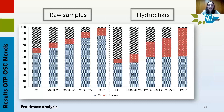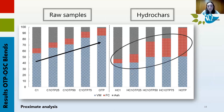For the proximate analysis, a clear trend is visible for the raw samples: an increase in volatile matter when increasing the olive tree pruning content in the blend, and an important decrease in ash content. For the hydrochar, volatile matter doesn't show a pronounced increase, but fixed carbon does, above all in the blends with a higher concentration of olive pruning. Also, since olive pruning doesn't have a large amount of ash, this reduction can be seen in the blends as well.